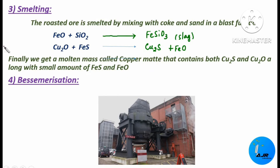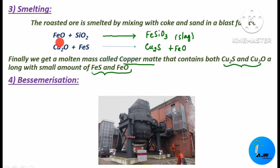Copper matte is a mixture of Cu2S and Cu2O with small amounts of FeS and FeO. The role of silica during extraction of copper is to remove FeO present in the matte by converting it to FeSiO3, which is the slag. That is why silica acts as a flux.